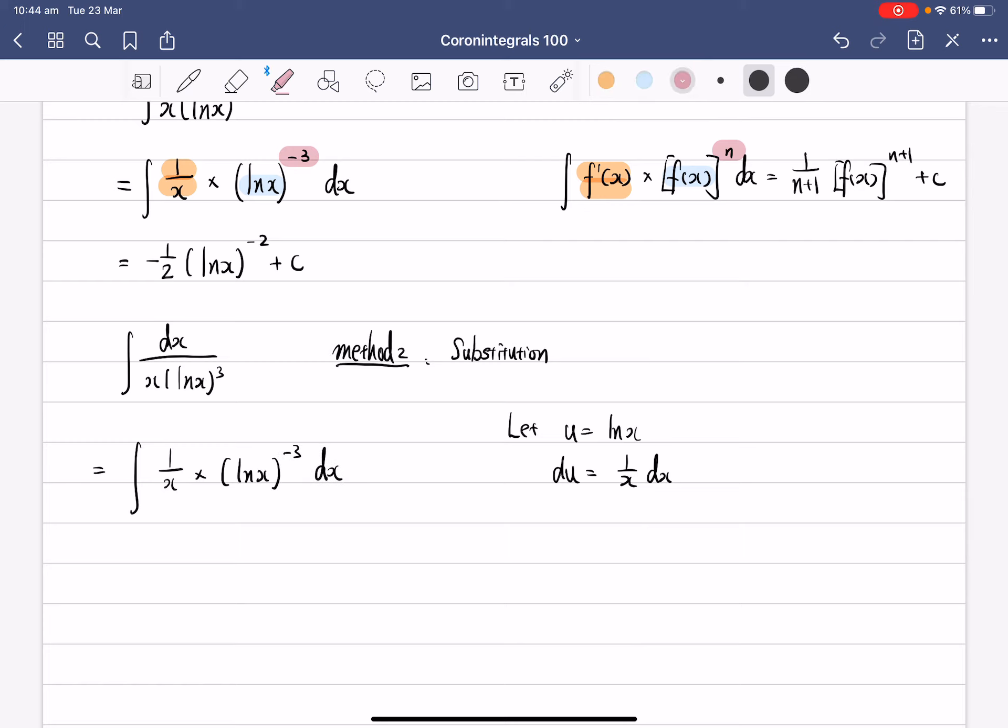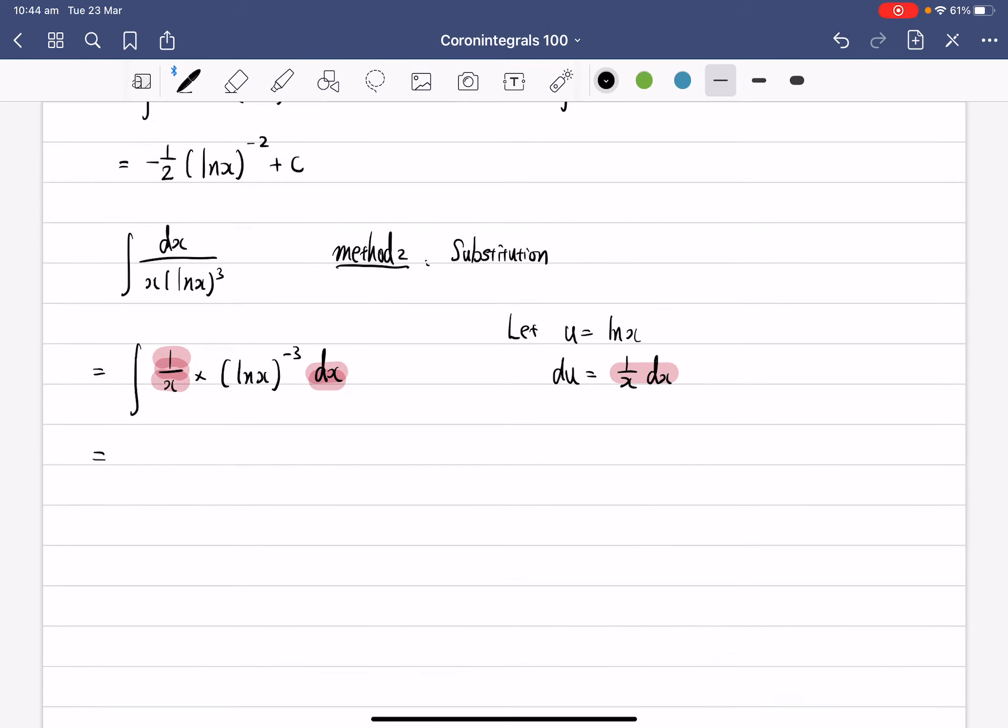Now as you can see, that 1 over x dx can be replaced. So these two joined together can be replaced by just simply du. So now we can substitute everything back. We've got integrate u to the power of minus 3 du.